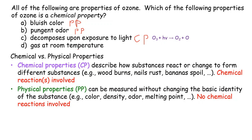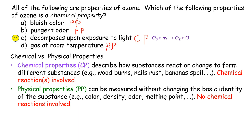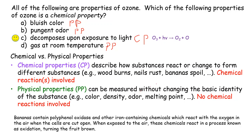Choice D: ozone is a gas at room temperature. This simply describes the physical state of ozone — ozone at room temperature is just a gas — so that's a physical property. The correct answer for this question is C. As an additional example, bananas spoil — if you want to learn more about the chemical reactions going on in the banana spoiling process, you can read further to better understand those chemical reactions.